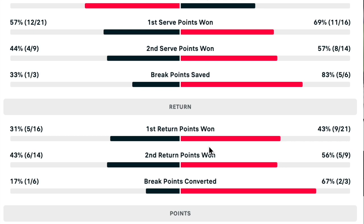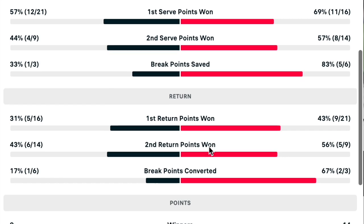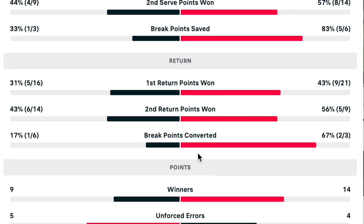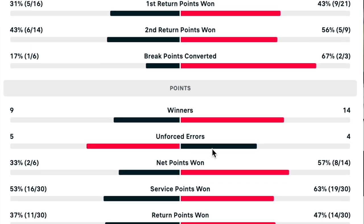Break points converted are treated much the same as break points saved as it shows confidence and fighting spirit. This is low from Kekmanovic, which is an alarm bell to consider, as he only converted one out of six opportunities. Kekmanovic hit nine winners versus 14 from Norrie — you want these numbers to be closer together in an ideal scenario, but nine versus 14 is not a major indicator. Five unforced errors from Kekmanovic versus four from Norrie is insignificant. Net points I'm not bothered about.